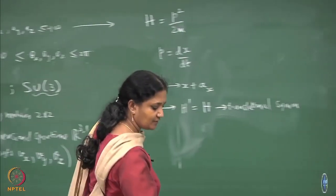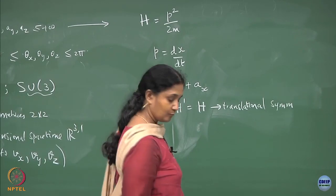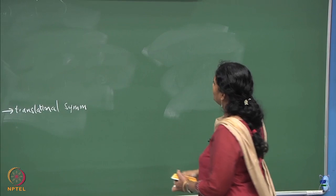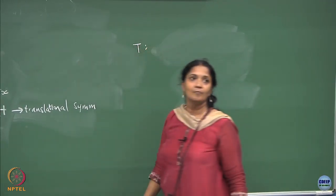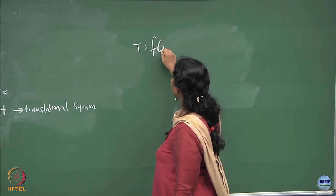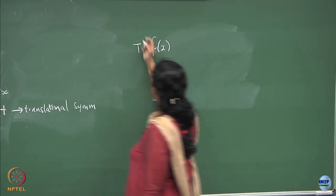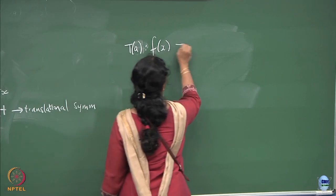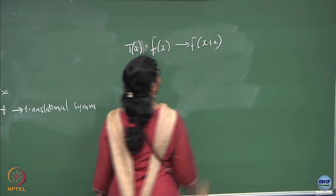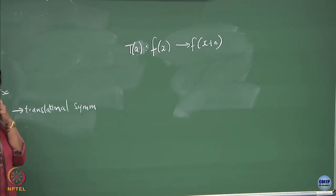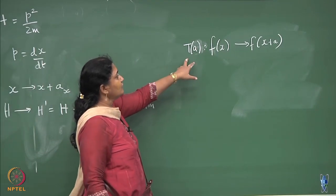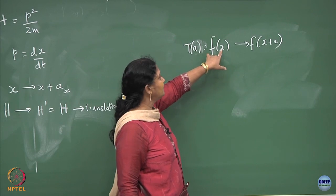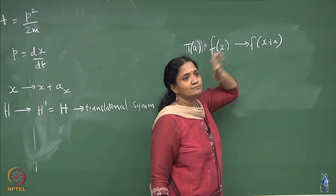Let us do this operation. Take a translation operator, let us apply it on some arbitrary function of x. We take this translation operator with unit a — it is supposed to give you the function of x plus a. Now I want to find what is the explicit form of this T operator, which when acting on arbitrary functions shifts the x position to x plus a.